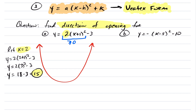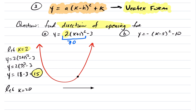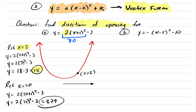What would happen if I let x be 20, going further to the right? You'd get y equals 2 times 20 plus 1 squared minus 3, which is 2 times 21 squared minus 3. If you calculate that, you get 879. So by going over to x equals 20, we're at the point (20, 879). Likewise, had I chosen negative values going the opposite direction, you'd also get very large numbers, because again you're squaring that value. The direction of this quadratic is all determined by this leading coefficient a.